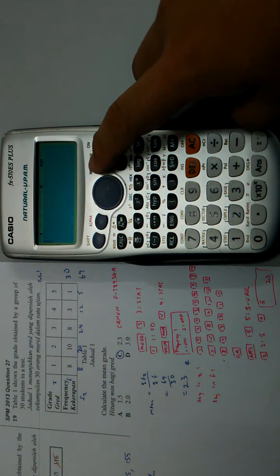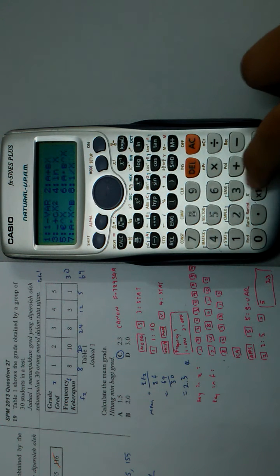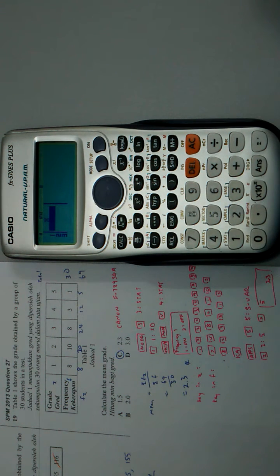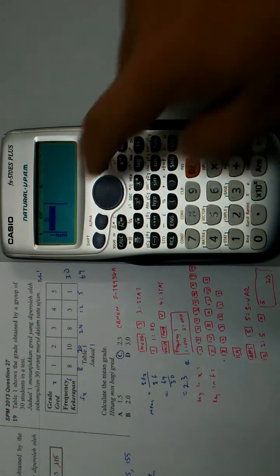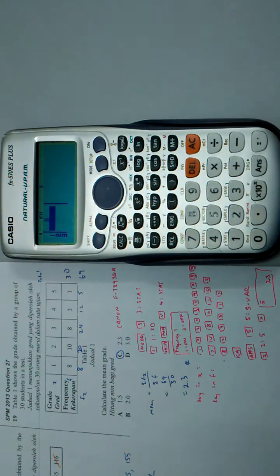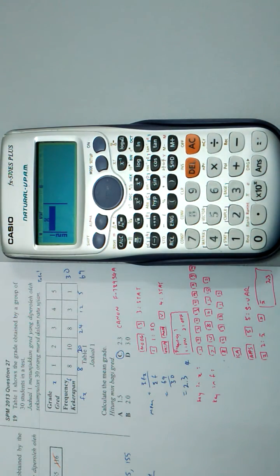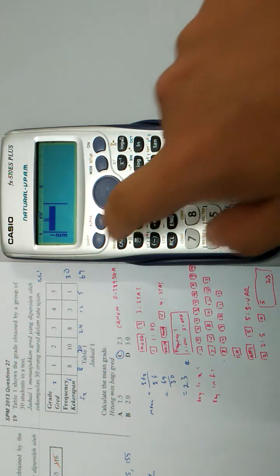I press Mode, then 3 for Statistics, then 1 for one-variable. This calculator allows you to key in X only without frequency - it doesn't have the frequency column by default, so I have to switch on the frequency column.